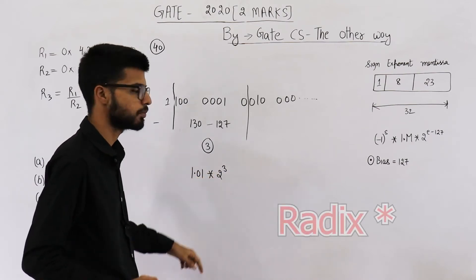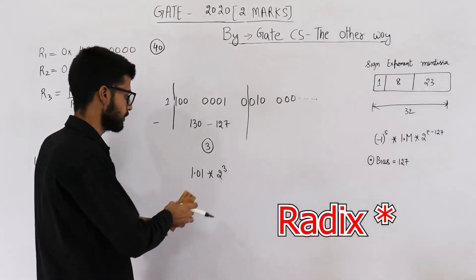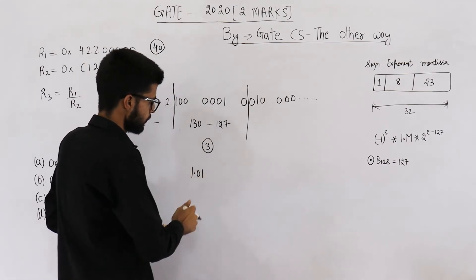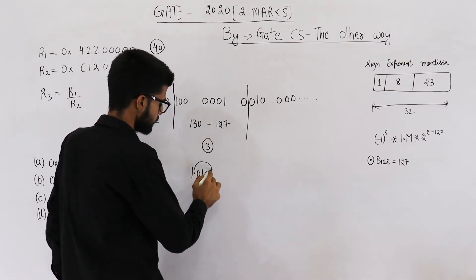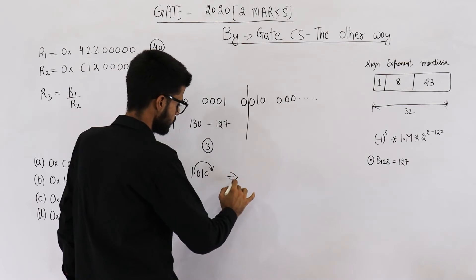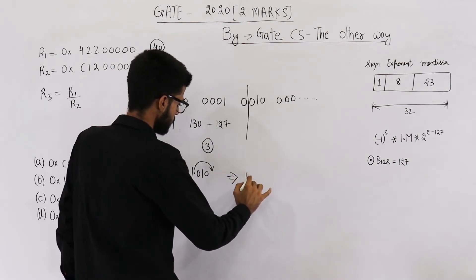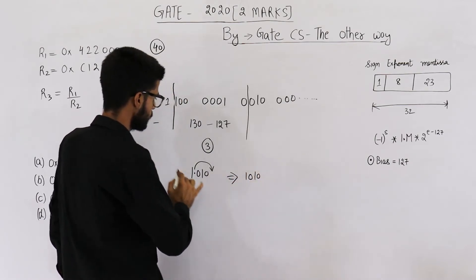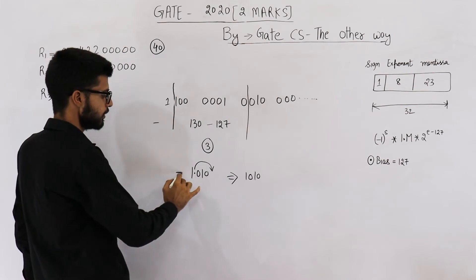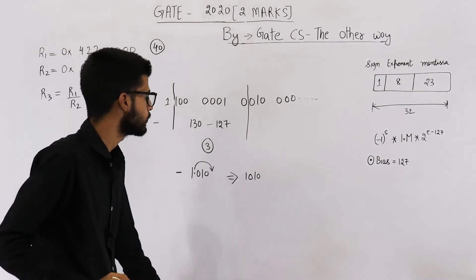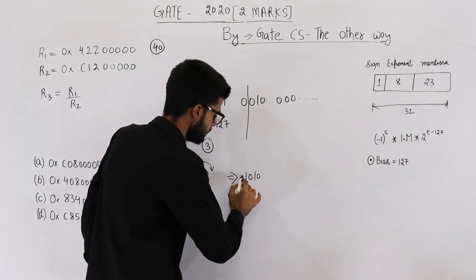So the number will be 1.01 into 2 raised to the power 3. So just solve this 2 raised to the power 3 by shifting this decimal to the right side by 3 bits, so it will just come here, which is 1010. And this represents a minus, so this number will be actually minus 10.